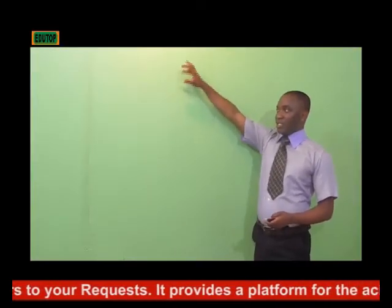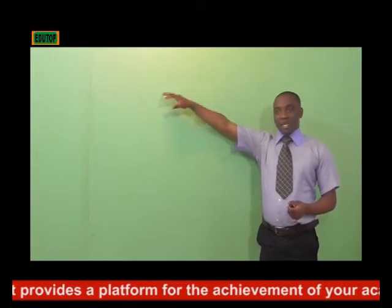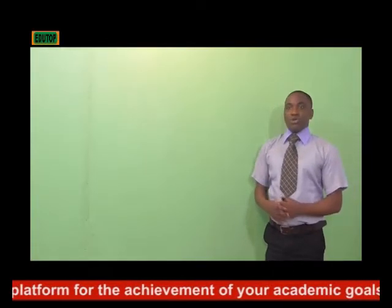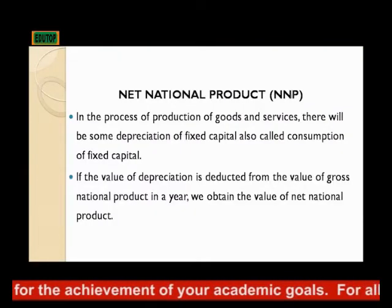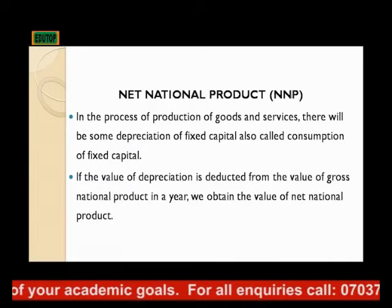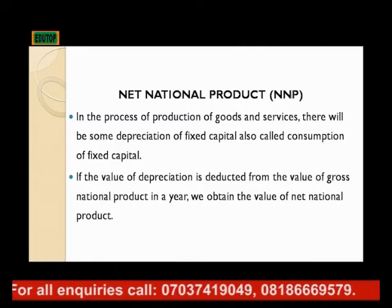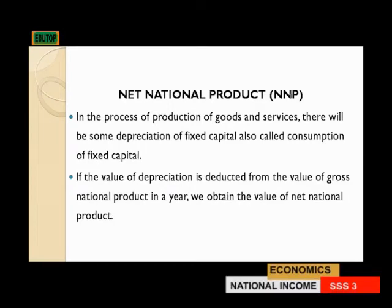Those are the key points on how to calculate GDP both at market price and at factor cost. Now, another concept that is also very important is what we refer to as NNP — net national product. In the process of production of goods and services, there will be some depreciation of fixed capital, also called consumption of fixed capital. If the value of fixed capital is deducted from the value of gross national product in a year, then we arrive at the net national product.